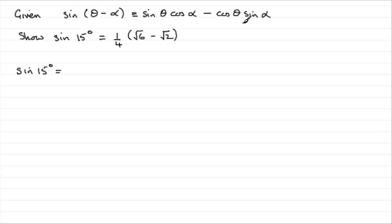And we've got to write this as the difference between two angles, and those two angles are going to be ones that have well known trigonometric ratios. And that would be 45 degrees and 30 degrees. If you do the difference between those two angles, you're going to get 15 degrees.